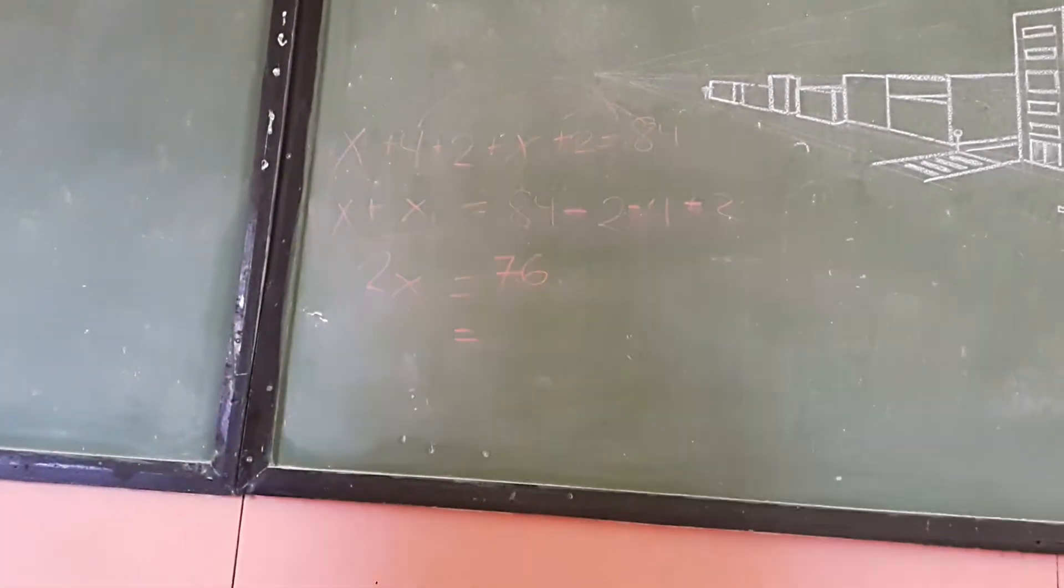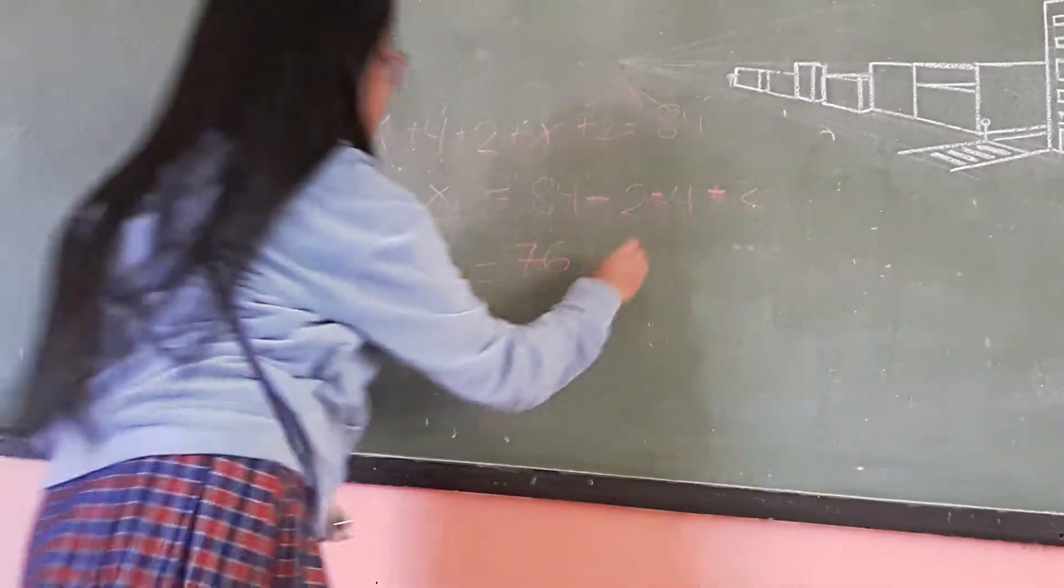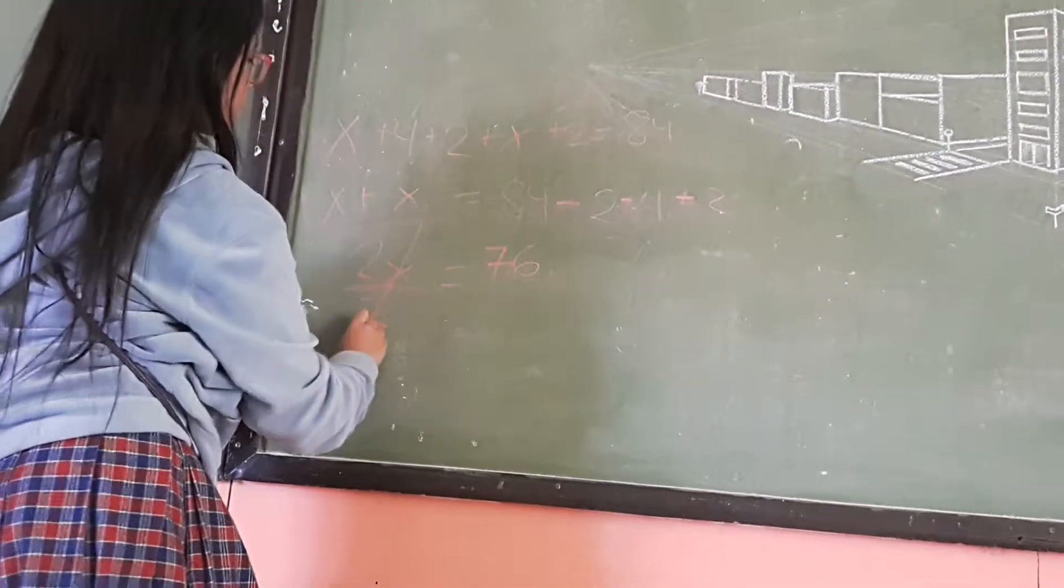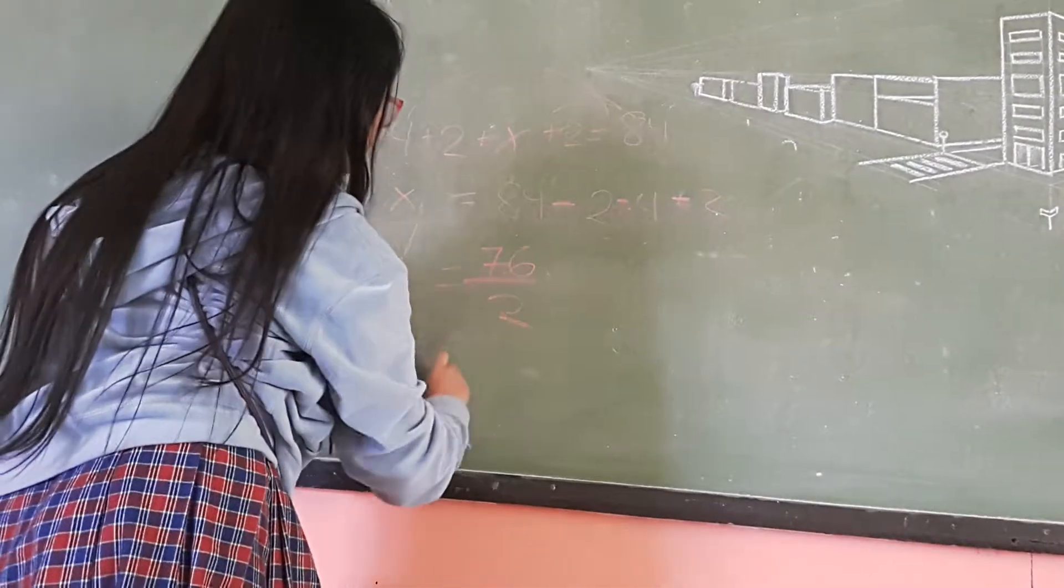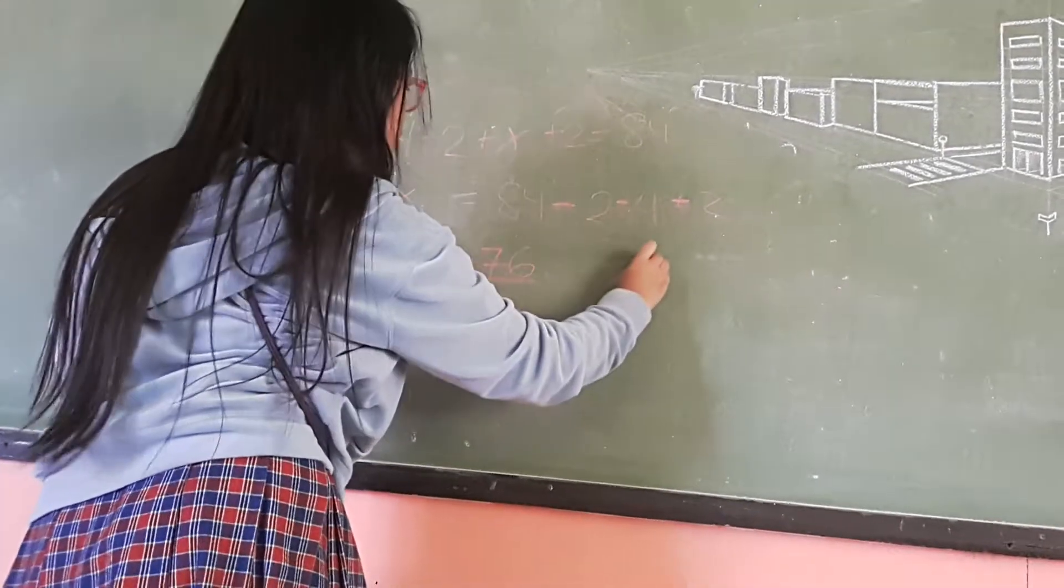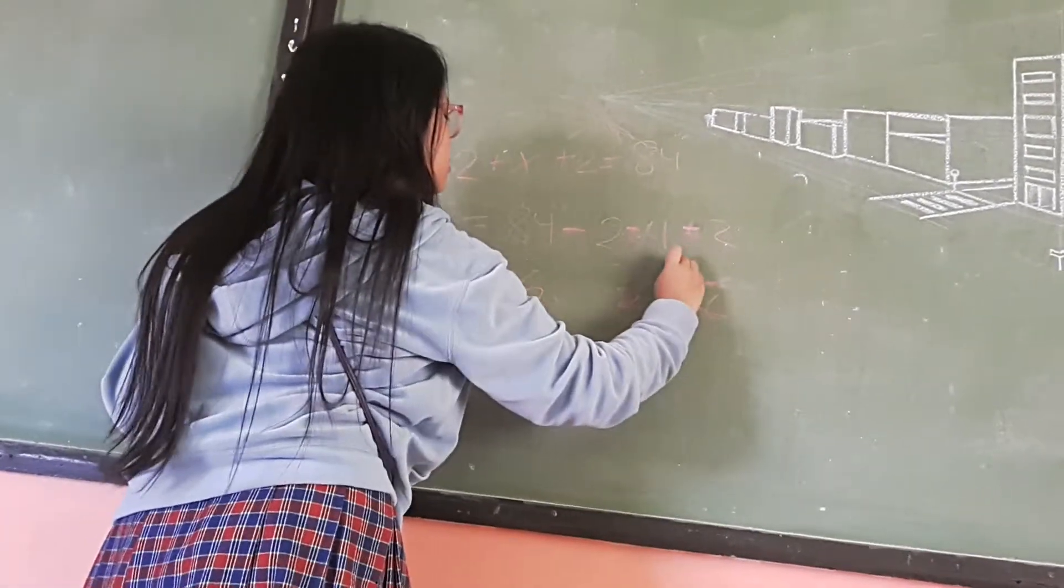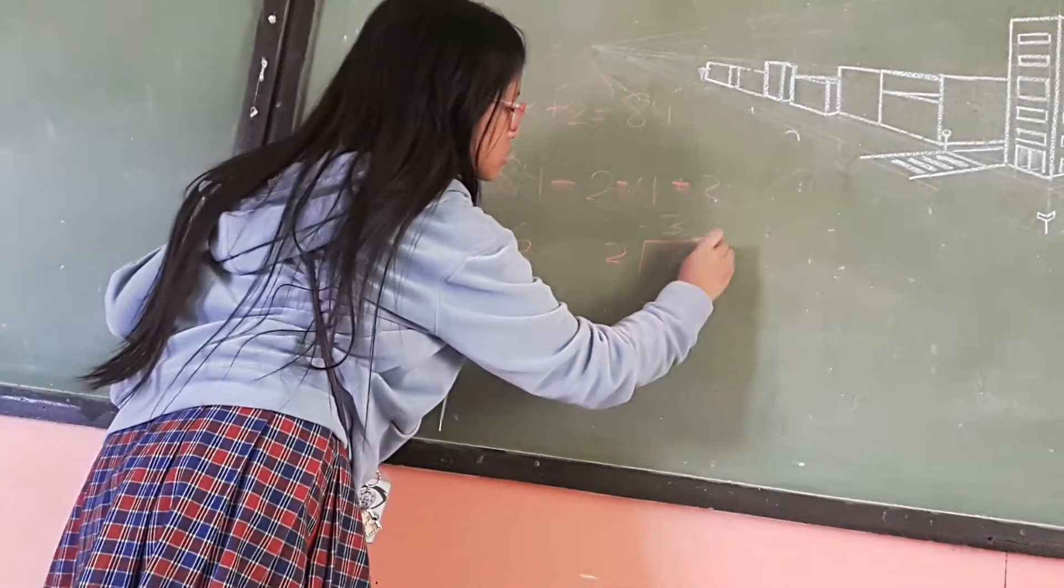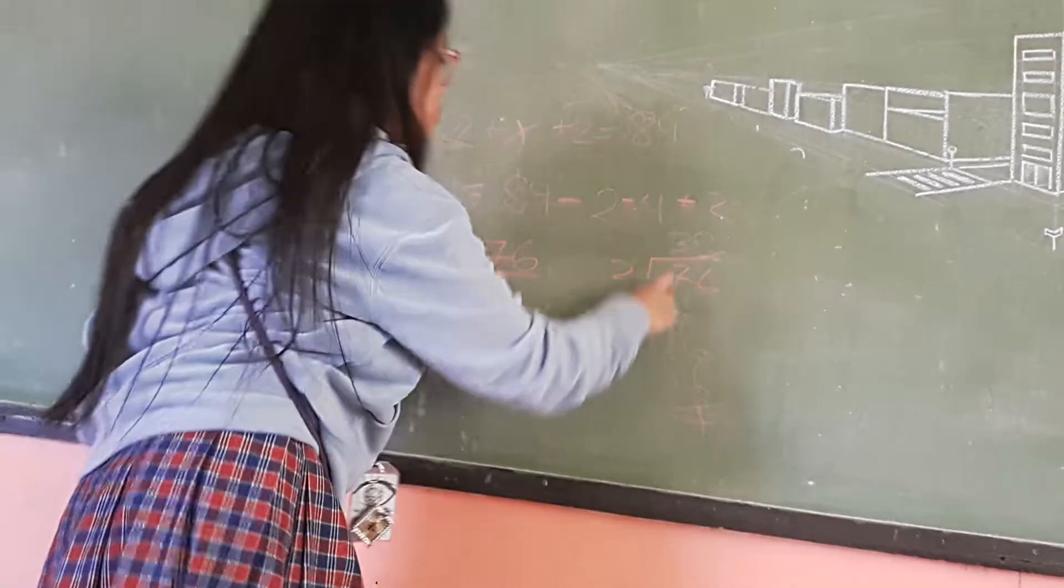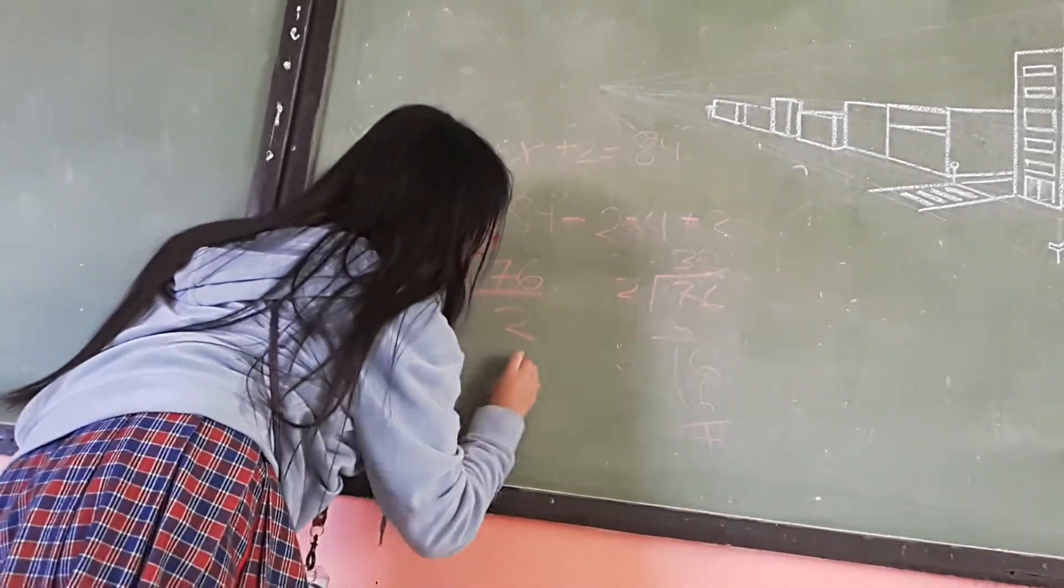Now, since 2X equals 76, we divide both sides by 2. The answer will be 76 divided by 2 is 38. That means X equals 38.